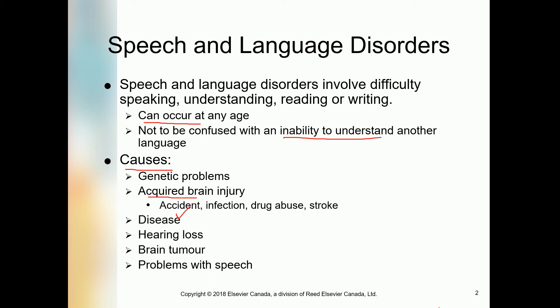Accident, infection, drug abuse, and stroke — these are the major causes of brain injury. And because of that brain injury, people have difficulty in using words, communicating with others, and understanding other people. Both the language and speech disorder involve these types of accidents.